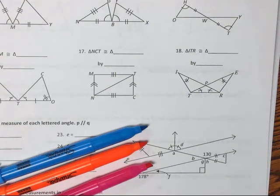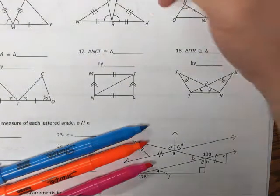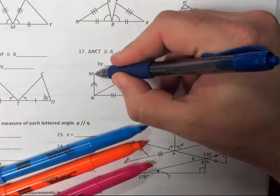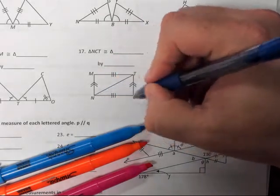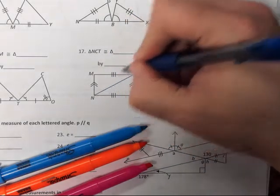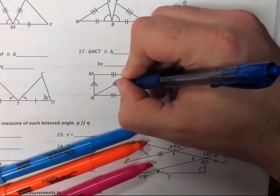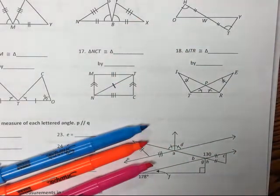All right, moving on to number 17. Same as before, trying to prove that two triangles are congruent. Now I can see that segment MT is congruent to segment NC. I also know that segment MT is congruent to itself, so I'll go ahead and put a hash mark there.